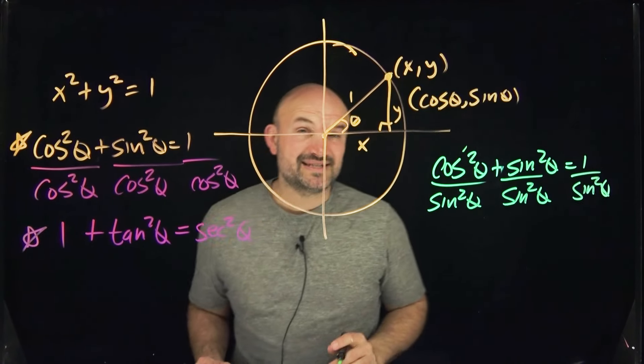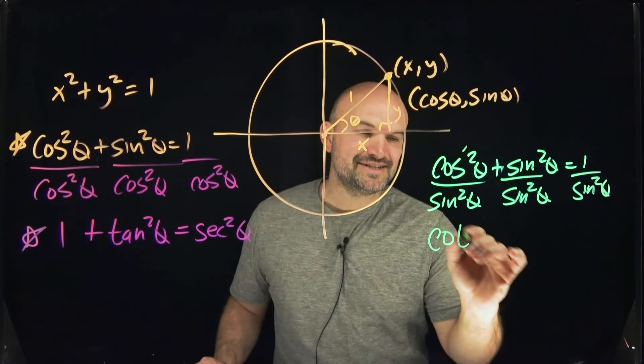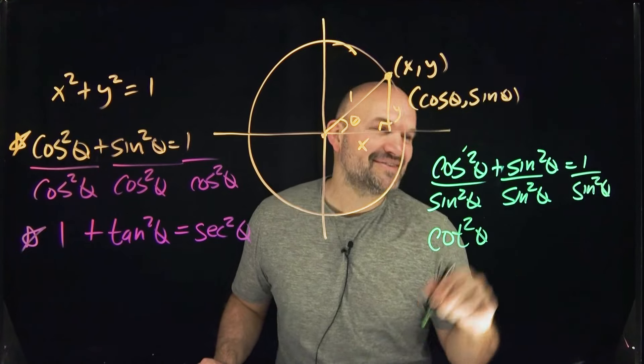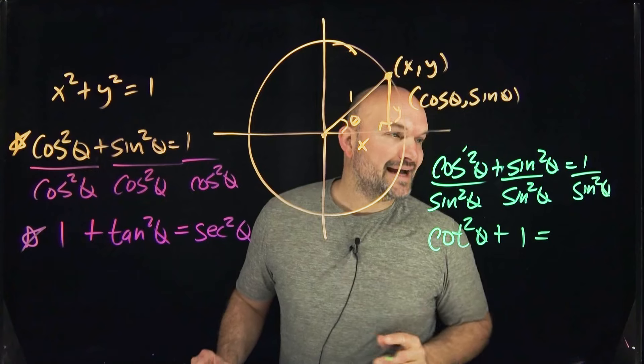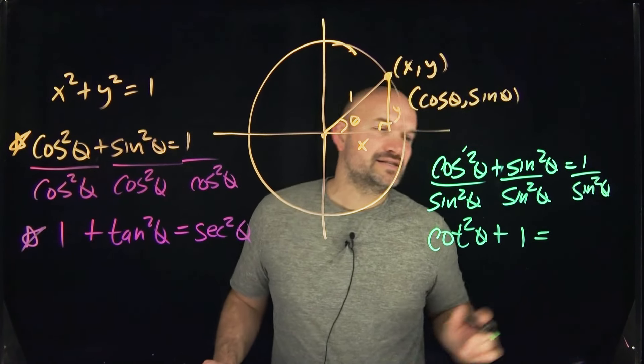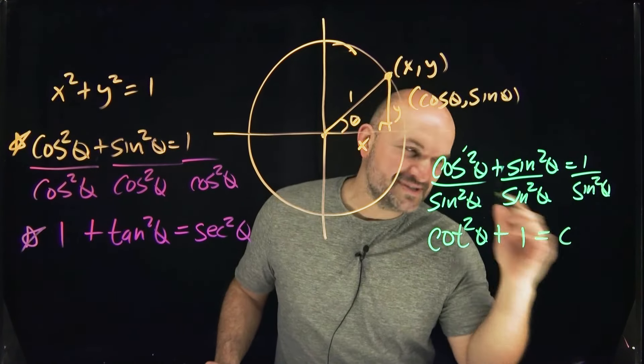So cosine squared of theta divided by sine squared of theta is going to be cotangent squared of theta. Sine squared of theta divided by sine squared of theta is going to be one. And one divided by sine squared of theta is going to be cosecant squared.